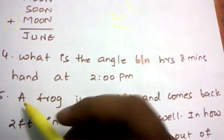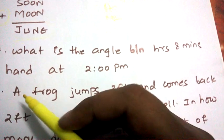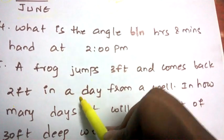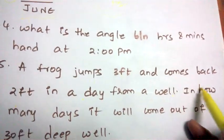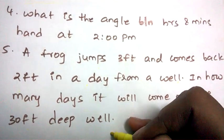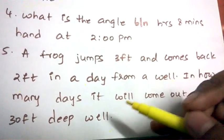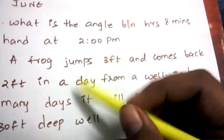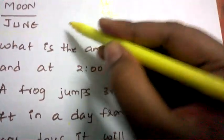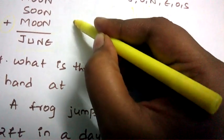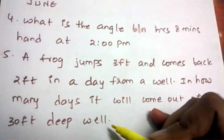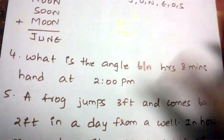The last and most important puzzle question is: a frog jumps 3 feet and comes back 2 feet in a day from a well. In how many days will it come out of a 30-feet deep well? This looks easy but it is not — the frog jumps 3 feet up and comes back 2 feet each day, and you need to figure out how many days it takes to escape the 30-foot well.